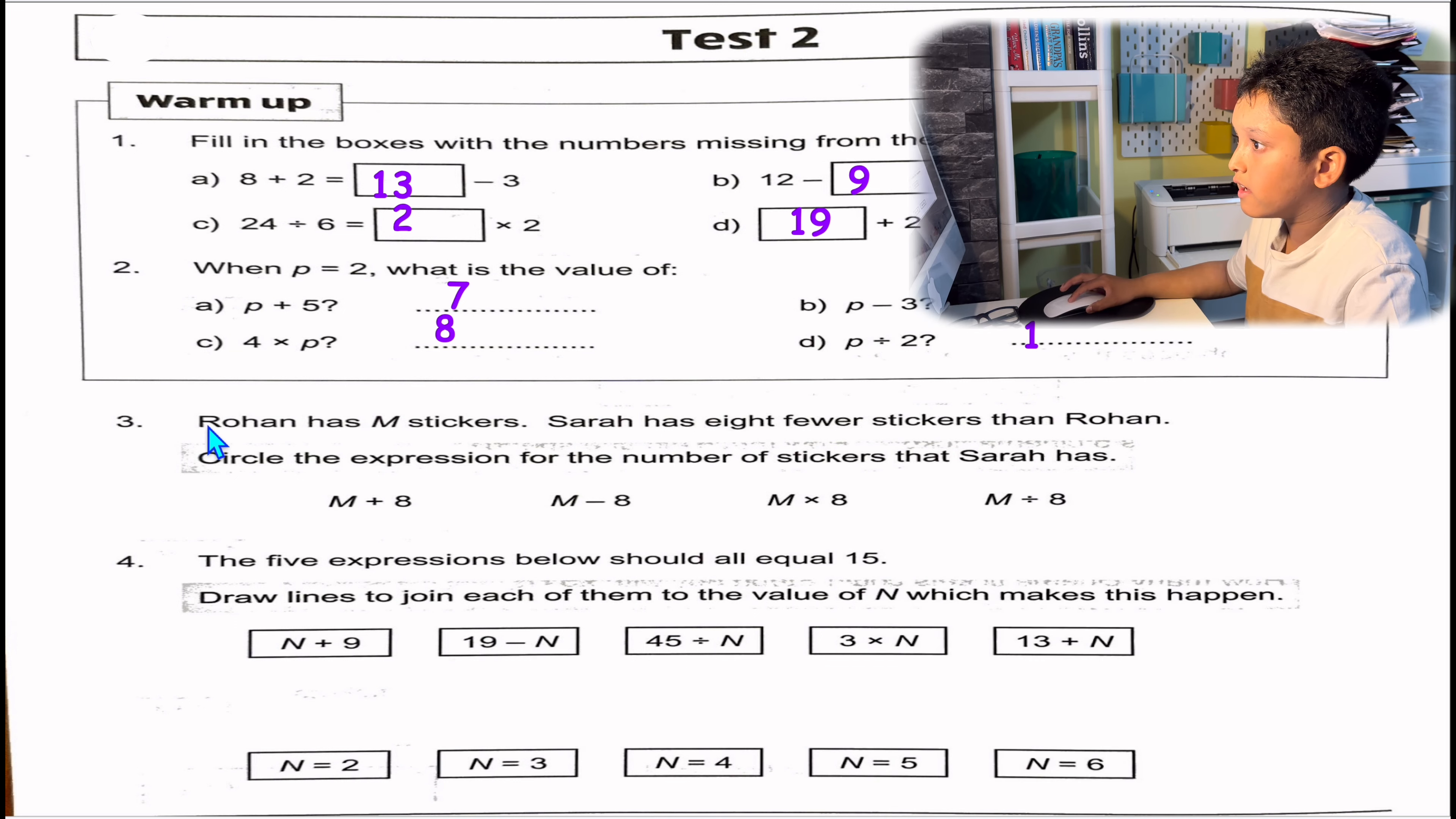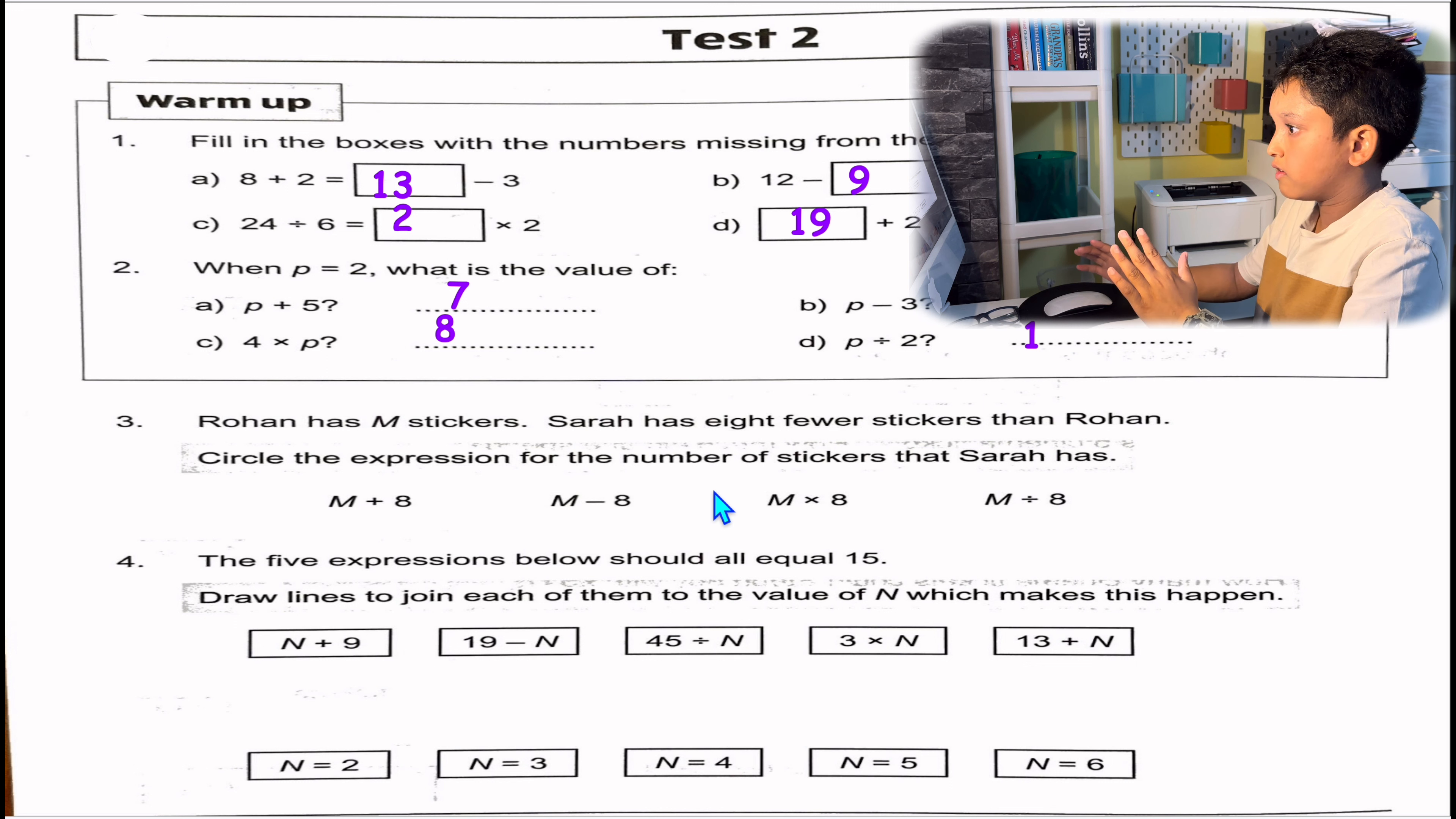Question 3: Rohan has M stickers. Sarah has 8 fewer stickers than Rohan. Circle the expression for the number of stickers that Sarah has. If Sarah has 8 fewer, that means M take away 8. This is what we need to circle.